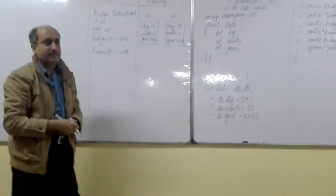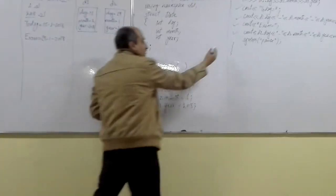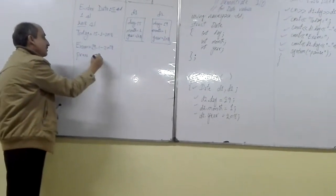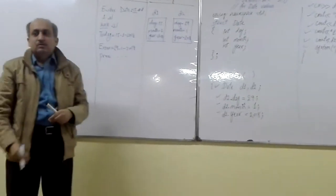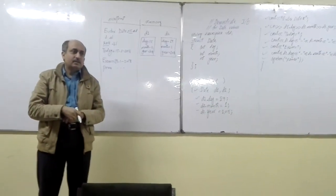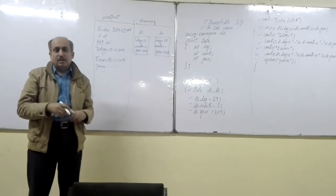That will be printed on screen. Then control of execution will go to the system pause statement and 'press any key to continue' will be printed on screen. So this was the simple execution of the small simple date structure program.